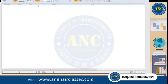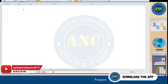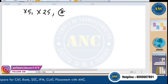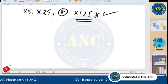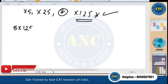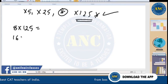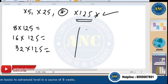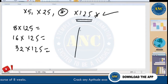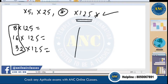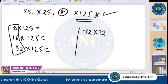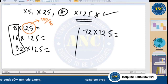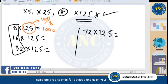We've discussed multiplication of any number with 5 and with 25. Now we are doing multiplication of any number with 125. Be patient — I'm taking 16 into 125 and 32 into 125. I'm intentionally taking only numbers which are multiples of 8, because 125 can be written as 1000 divided by 8.